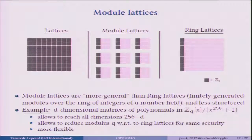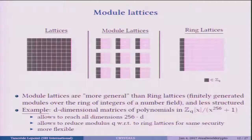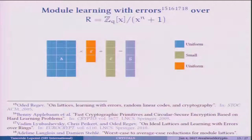The nice thing is that you can consider many of these things and the random part is all the black part, and the others can be derived. It allows reaching all dimensions 256 times T, whereas with ring lattices of the same form, you had to go from 256 to 512 to 1024 to 2048, and the gap between 1000 and 2000 is huge — both in performance and security. It also allows reducing the modulus, so we can work with smaller numbers. And it's more flexible: to increase security, instead of a 3×3 matrix, consider a 4×4 matrix, and in the implementation it will be easy to change.